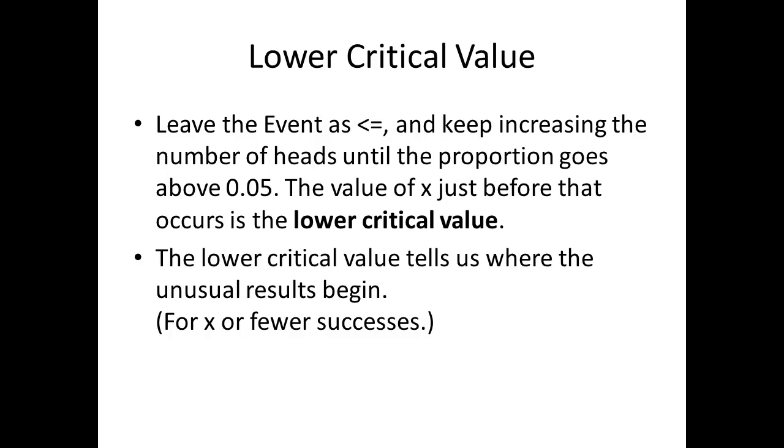Two things that we also need to find are the lower critical value and the upper critical value. To find the lower critical value, I want you to leave the event as less than or equal to, and I want you to keep increasing the number of heads until the proportion goes above .05 or 5%. The value of the number of heads, the value of X that occurs just before you go over 5% is the lower critical value. And basically what that tells us is where the unusual results begin for X or fewer successes.